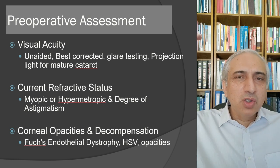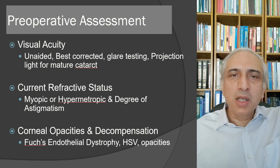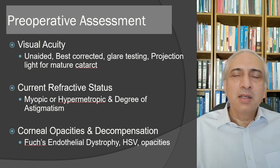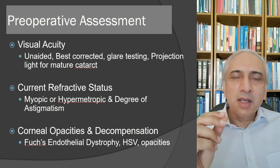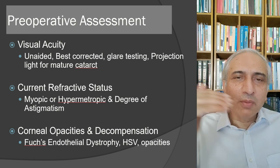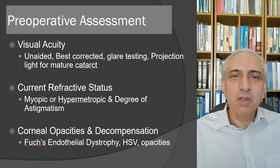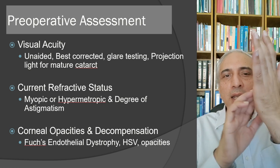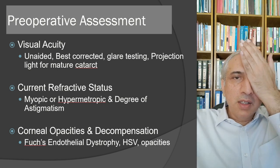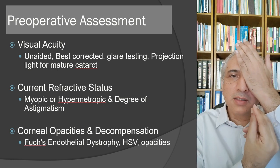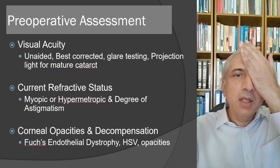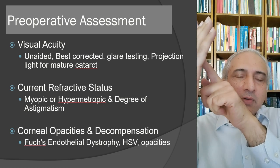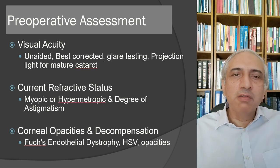For a mature cataract, shine light from all four quadrants to check if retinal status is intact — if the patient can perceive light in all four quadrants, the retina is functioning. Remember a cataract does not preclude light from reaching the retina. During projection of light testing, close the other eye with the palm of your hand — not the fingers — then shine light from each side and ask the patient where the light is coming from.